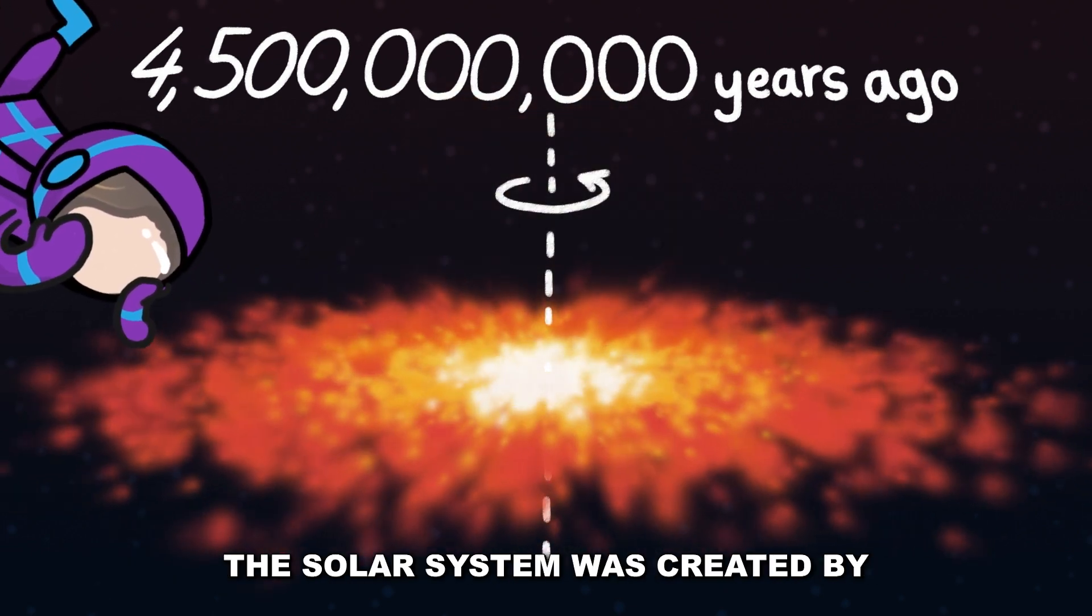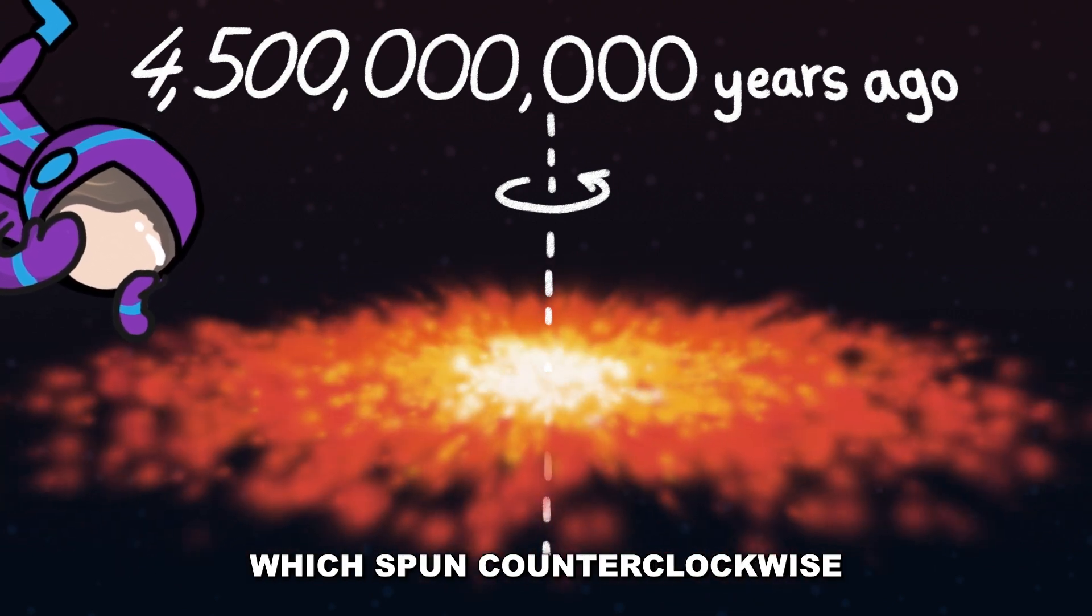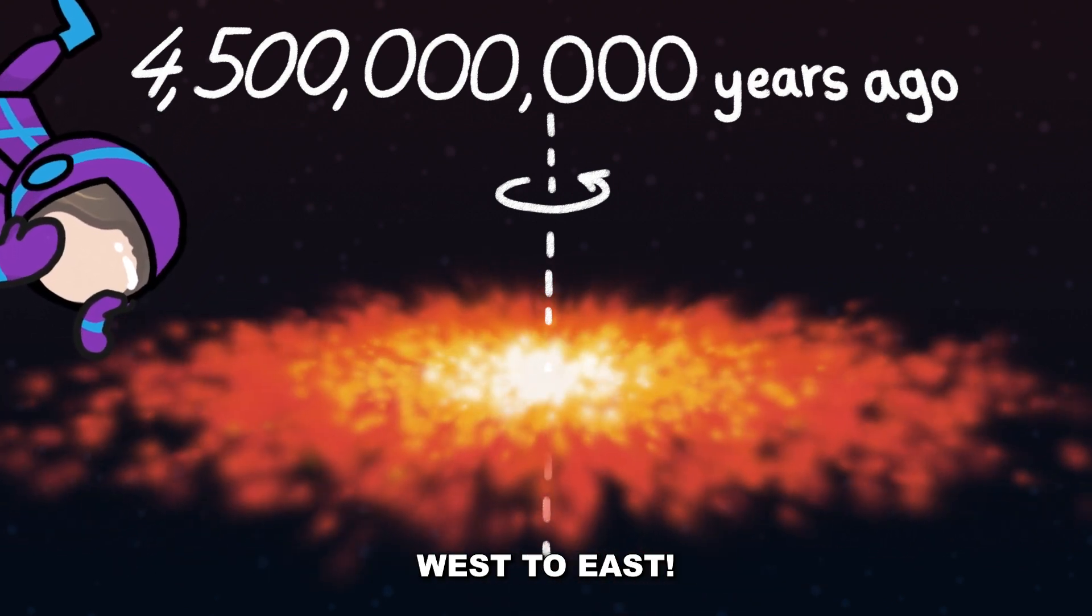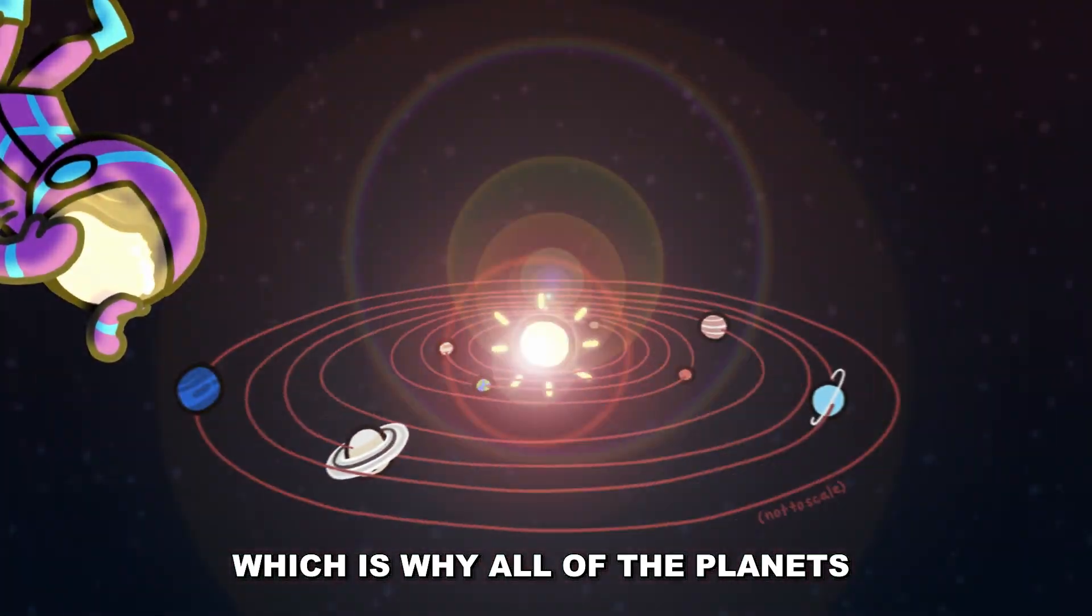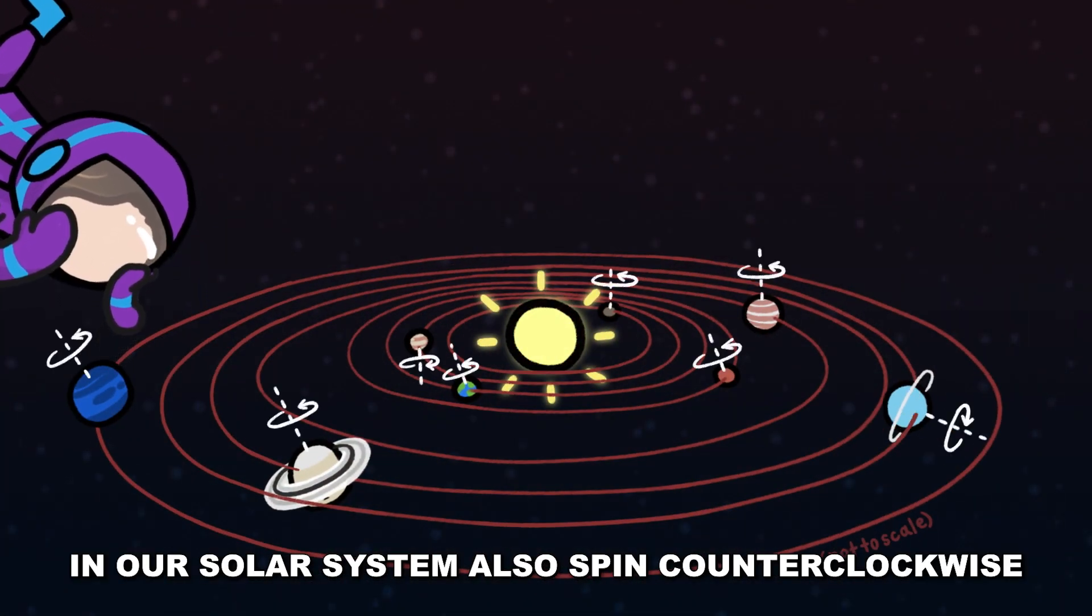The solar system was created by a rotating and collapsing cloud of gas which spun counterclockwise, west to east. This is why all of the planets in our solar system also spin counterclockwise.